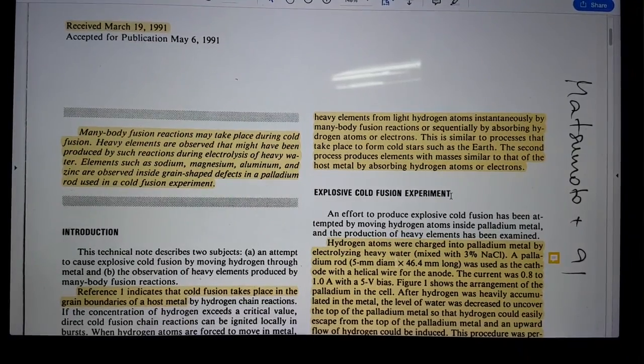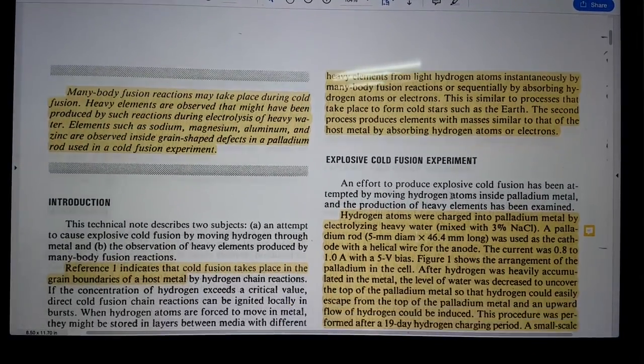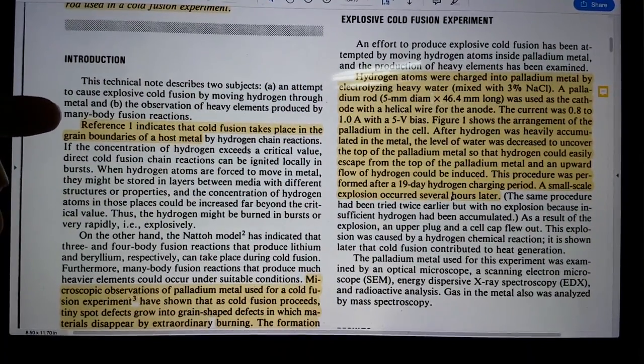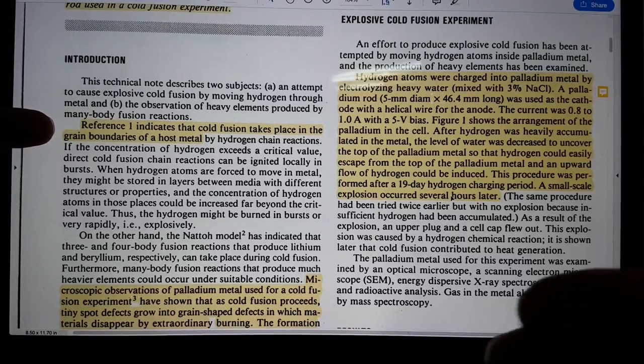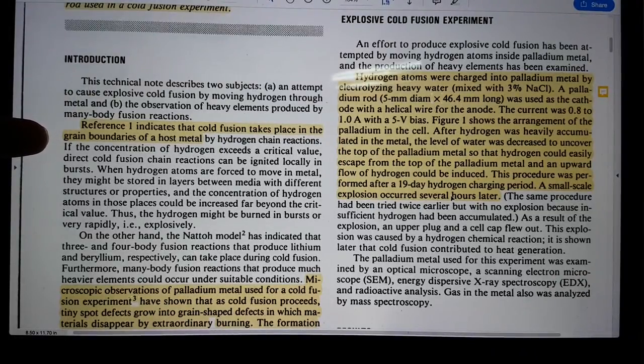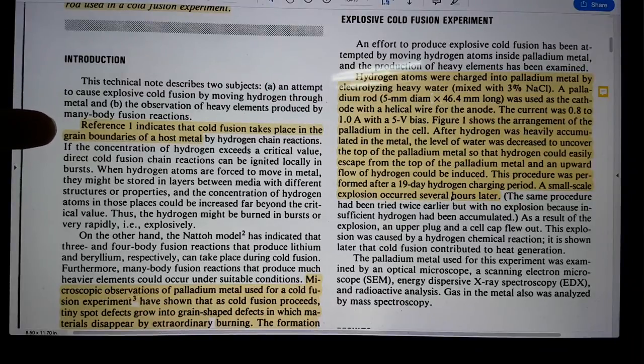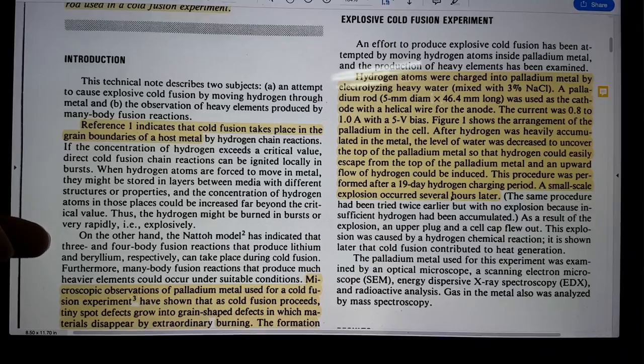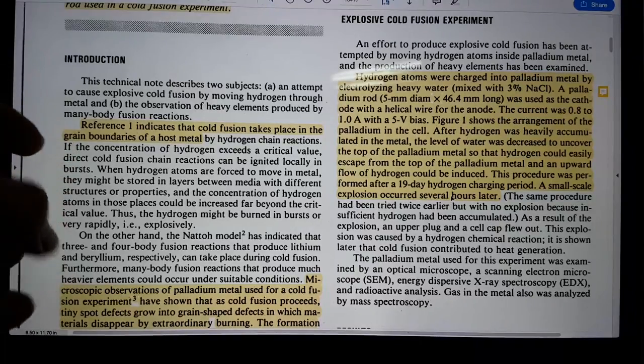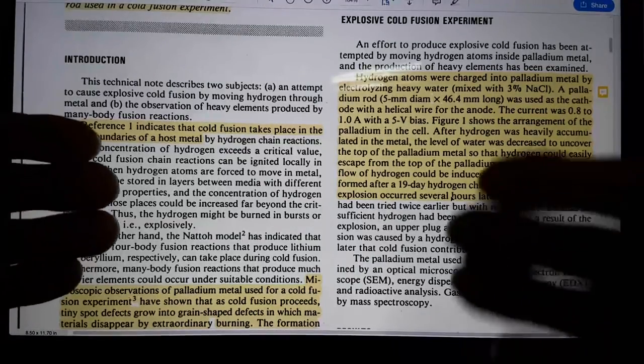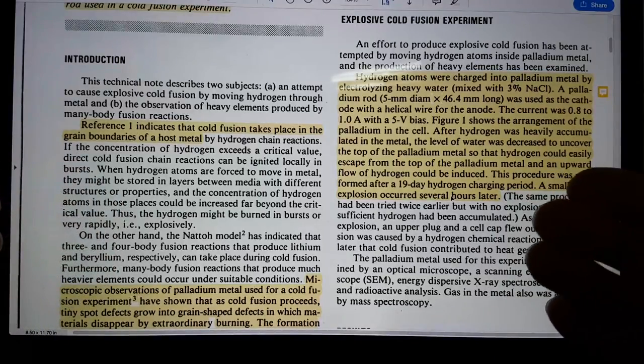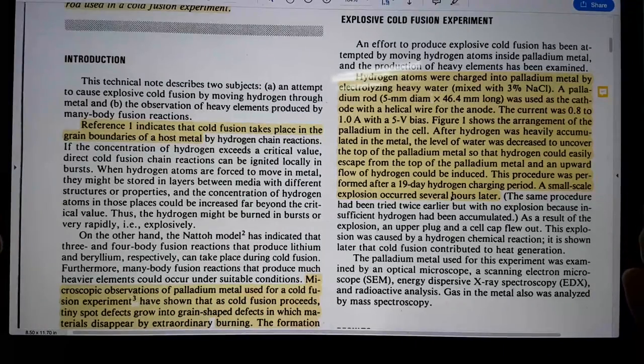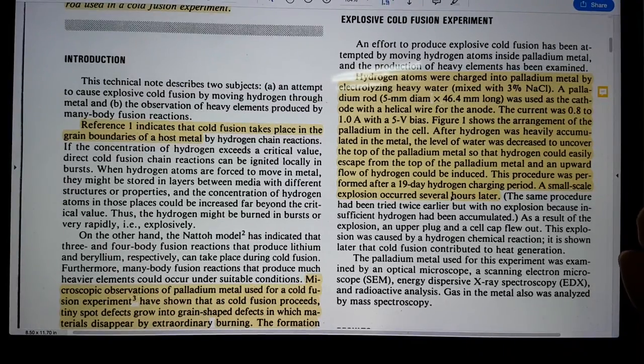So I'm just going to take you through, and I'll put a link to this paper so that you can look at it in your own time. Now, right from the introduction, second paragraph, reference one is a reference to his own work. Indicates that cold fusion takes place in the grain boundaries of a host metal. I would absolutely agree with that. He then goes on to describe the process. Now, what I will say about this guy is he was open-minded, and he regularly changed his views, but kept a core belief. He went with his gut feeling, and I think that was a good gut feeling.